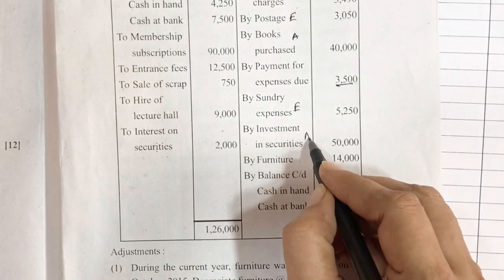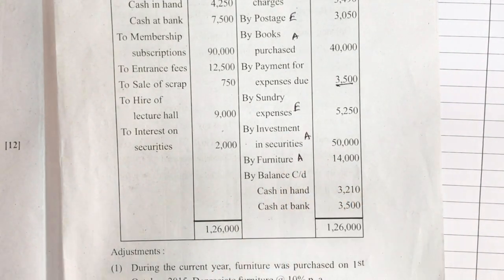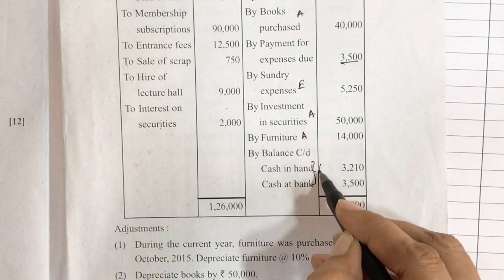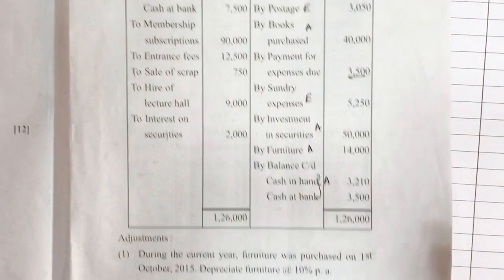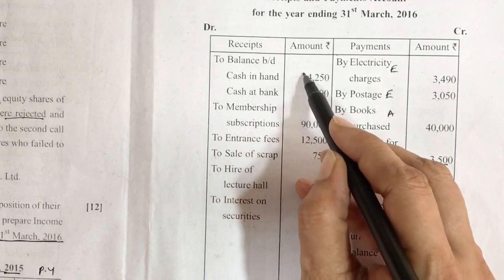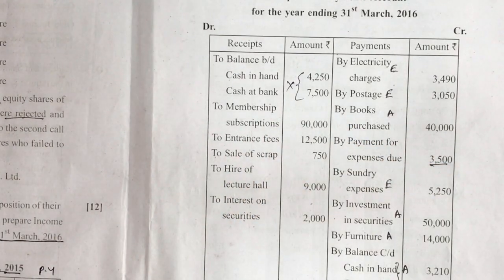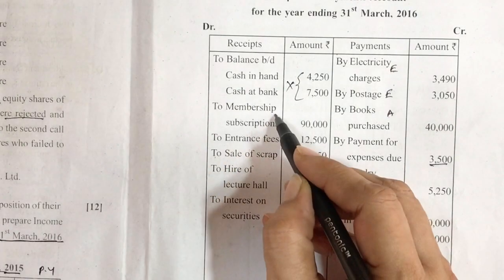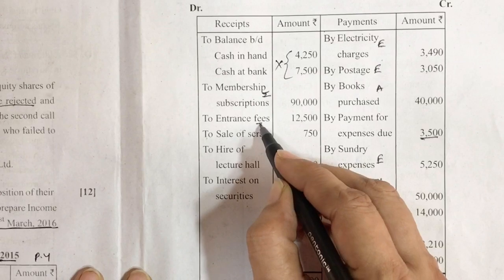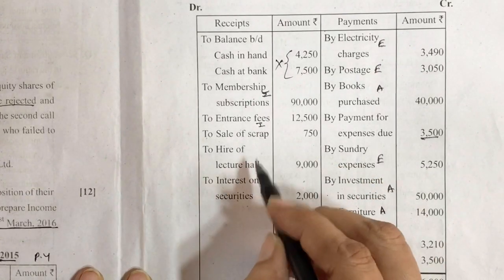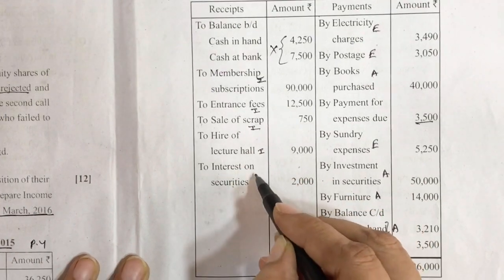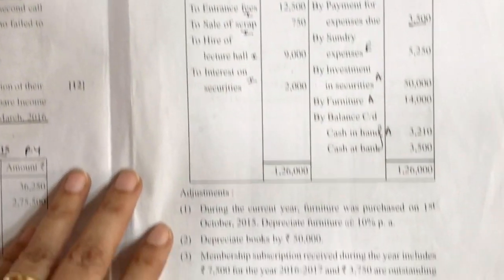Sundry expenses go to the expenses side. Investment goes to the asset side. Furniture again goes to the asset side. Balance carried down will go to our asset side. On the receipt side, membership subscription is our income, entrance fee is our income, sale of scrap is our income, hire of lecture hall is income, and interest on securities is income.